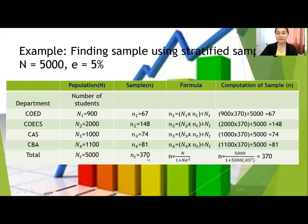After getting the total sample, you calculate the sample for each department using the formula: population of each department multiplied by the total sample, divided by the total population. For College of Education: 900 × 370 ÷ 5,000 = 67. For College of Engineering and Computer Studies: 2,000 × 370 ÷ 5,000 = 148. For College of Arts and Sciences: 1,000 × 370 ÷ 5,000 = 74. For CBA: 1,100 × 370 ÷ 5,000 = 81.